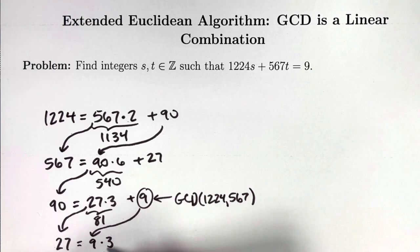Now do the same process again. 27 equals 9 times 3 plus 0. 9 is the last non-zero remainder, that means 9 is the GCD of the original numbers.